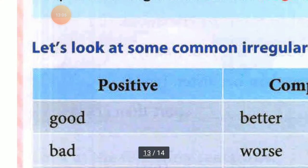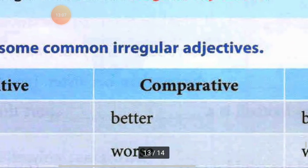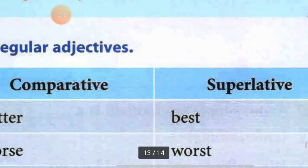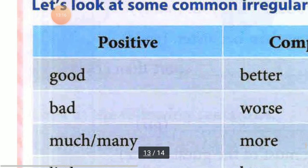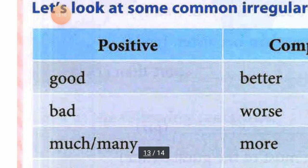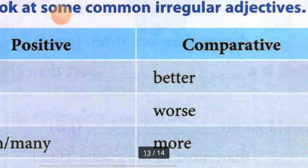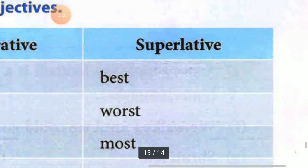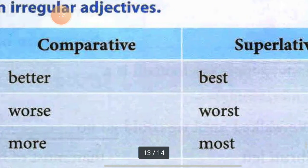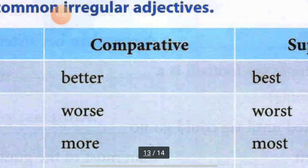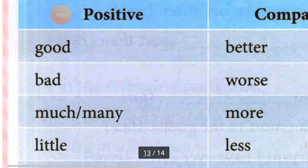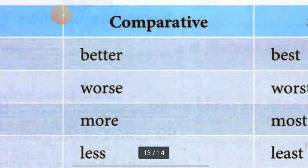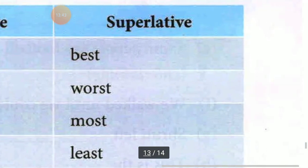Next word is bad — comparative: worse, superlative: worst. Then much or many — comparative: more, superlative: most. Read it as: much/many, more, most. Next word is little — comparative: less, superlative: least.